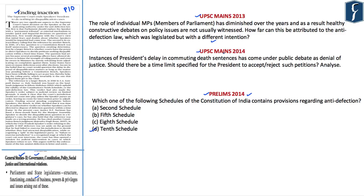In UPSC Mains 2014, a question was asked about the President's delay in commuting death sentences. On similar lines, the article we are discussing highlights that there has been undue delay by Speakers in deciding on the disqualification of Members of Parliament and State Legislatures, and such delays have hurt parliamentary democracy. As part of this analysis, we will understand the background, the recent Supreme Court judgment, basic provisions of anti-defection law, and the Court's various interpretations.